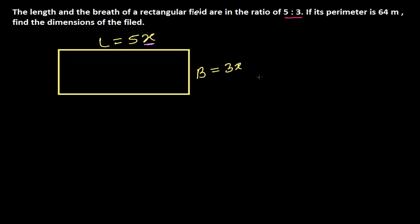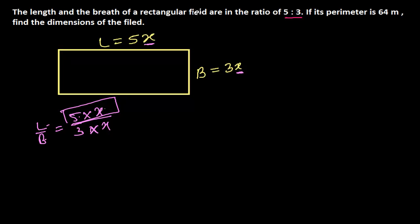You might be confused about why I'm putting X here. X represents any number — any integer. The ratio 5:3 means the length is 5 times something and the breadth is 3 times something. It doesn't mean the length is exactly 5 and the breadth is exactly 3. That's why I'm multiplying both by X. We don't know the exact value of X yet.